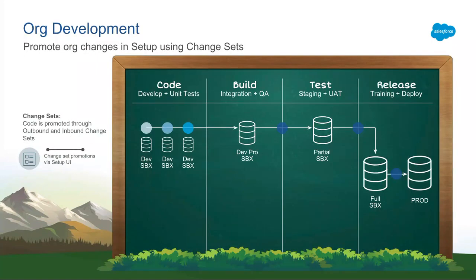For org development, you start off by creating a metadata copy of your production org, typically a developer sandbox. This is where you're building your changes, and as you're ready, you start moving those changes into larger sandboxes where you can have more sample data or production data. Think about developer pro sandboxes. The motion of changes is through the declarative change sets UI. Finally, just like packaging, with testing and UAT and staging, you start looking at partial and full sandboxes.